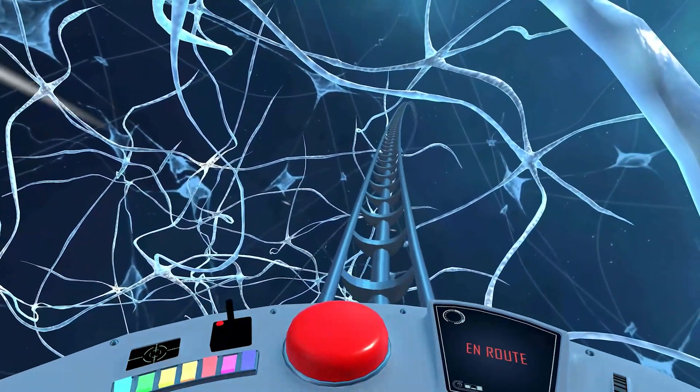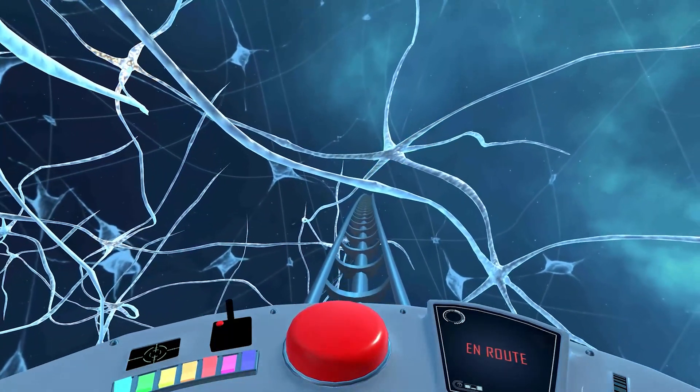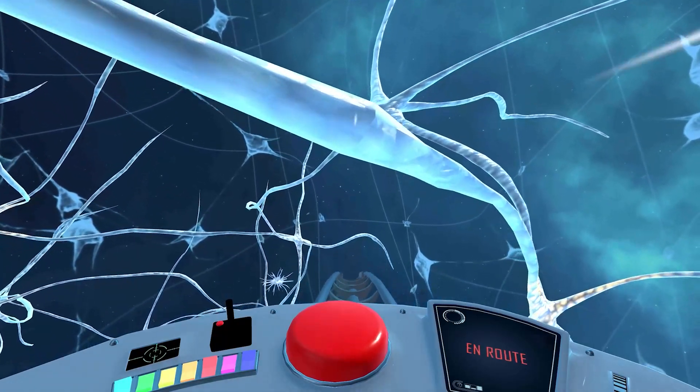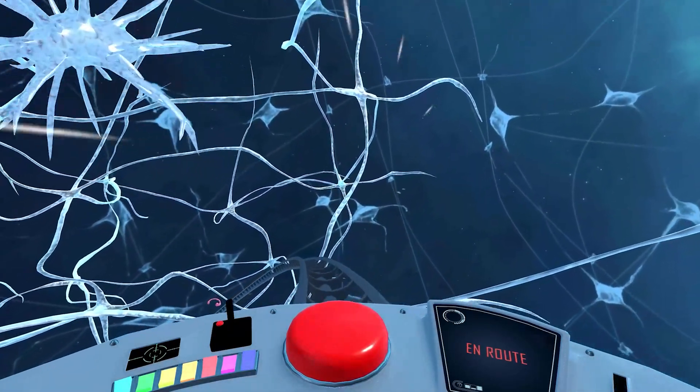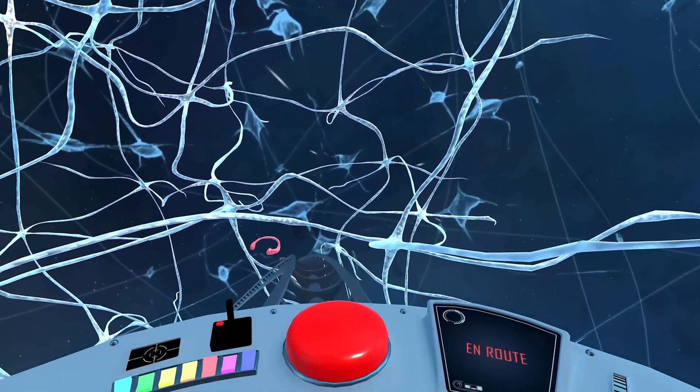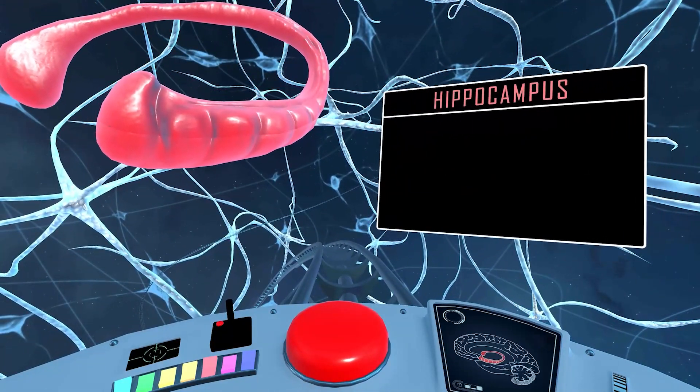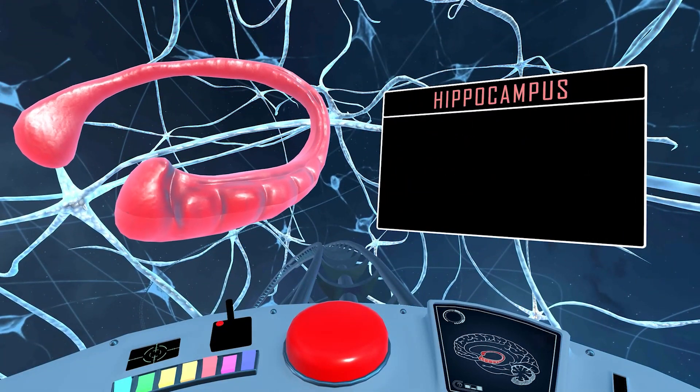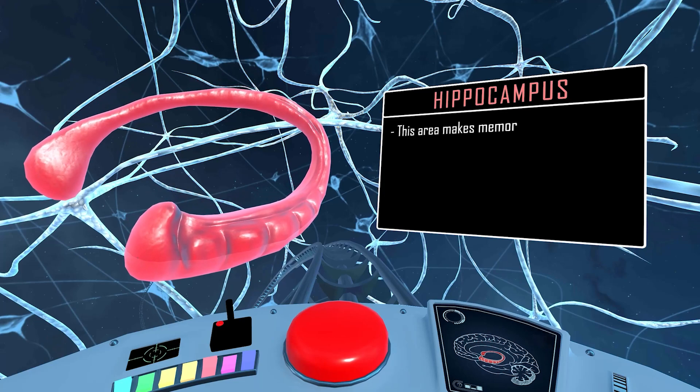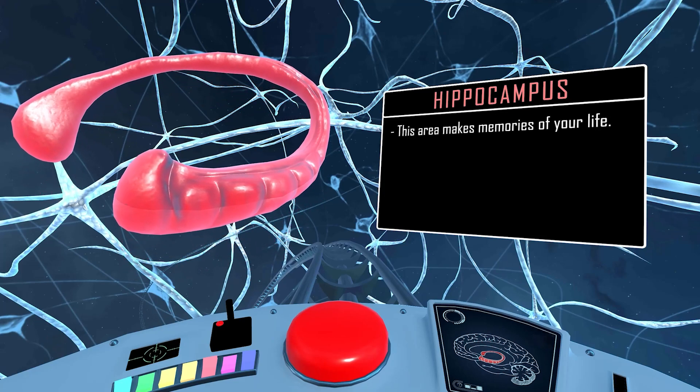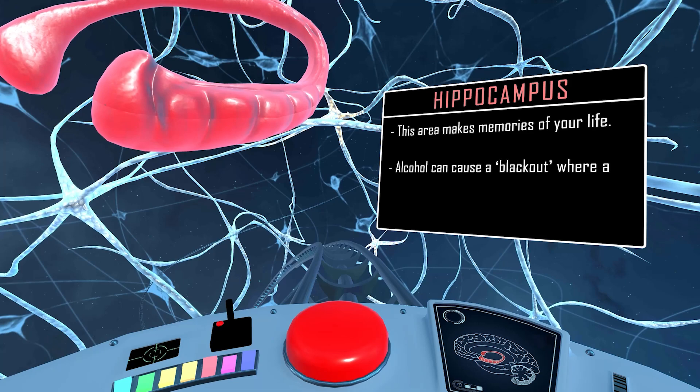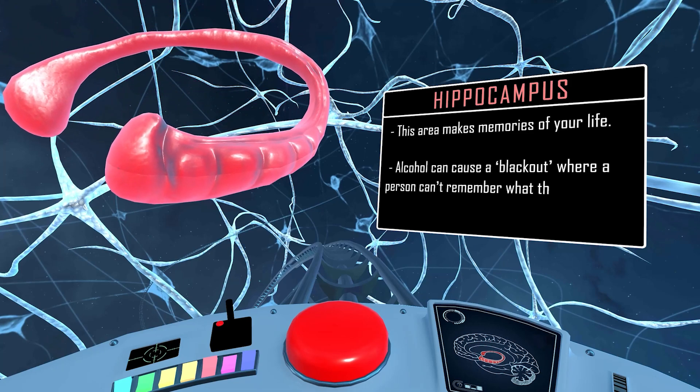We're now on a short trip next door to another important brain region. We have now arrived at the hippocampus. This area makes memories of your life. Alcohol can cause a blackout where a person can't remember what they did while they were drinking.